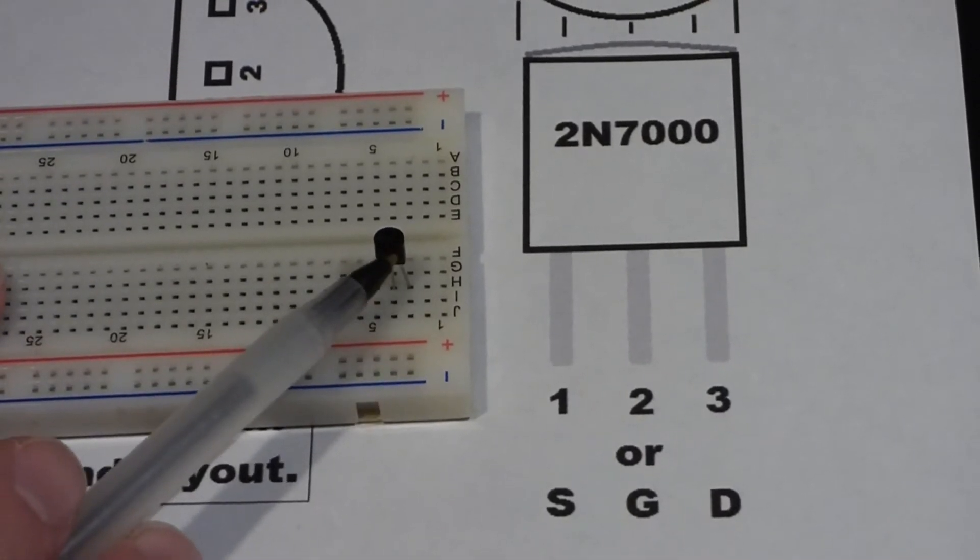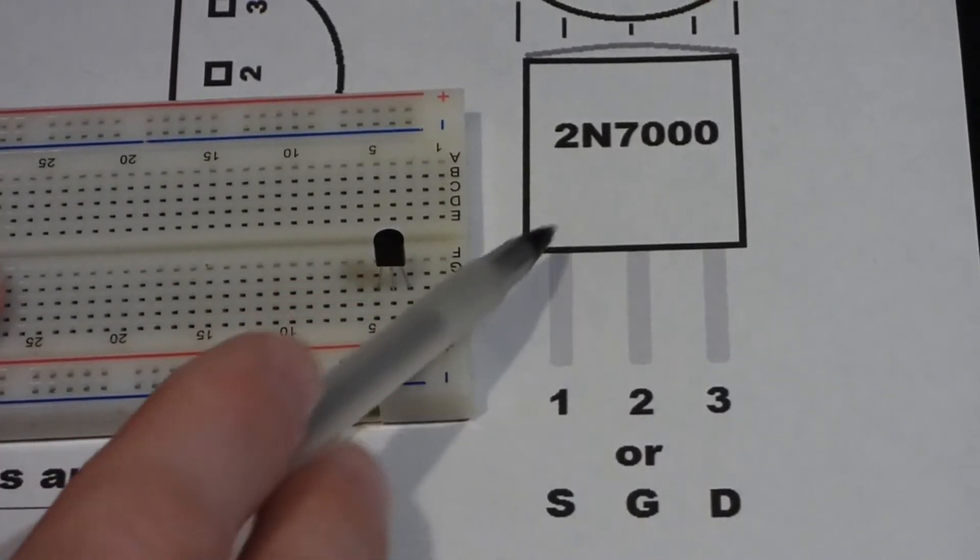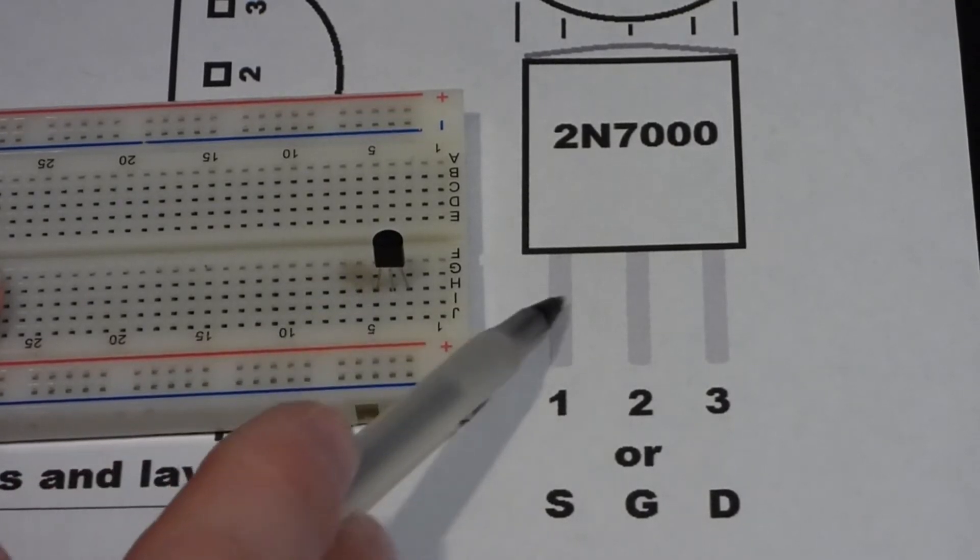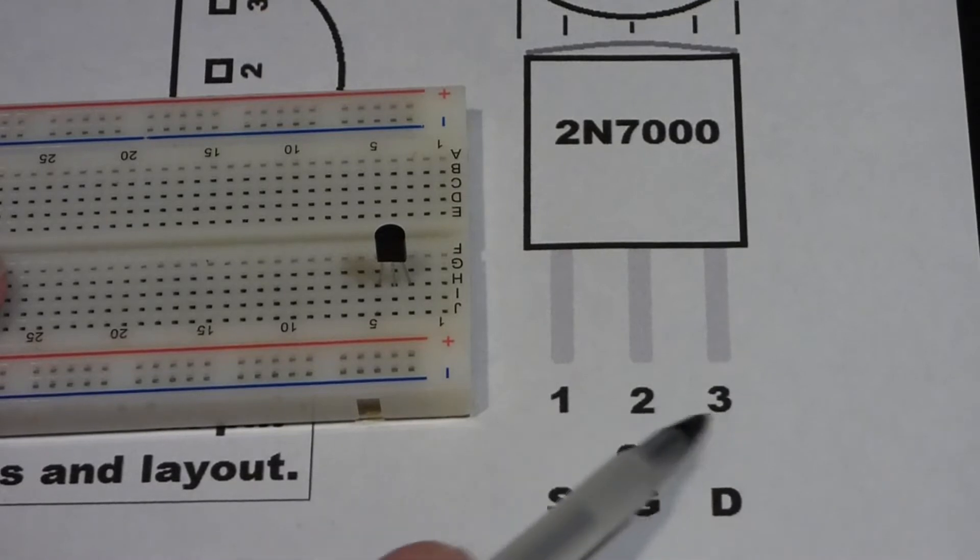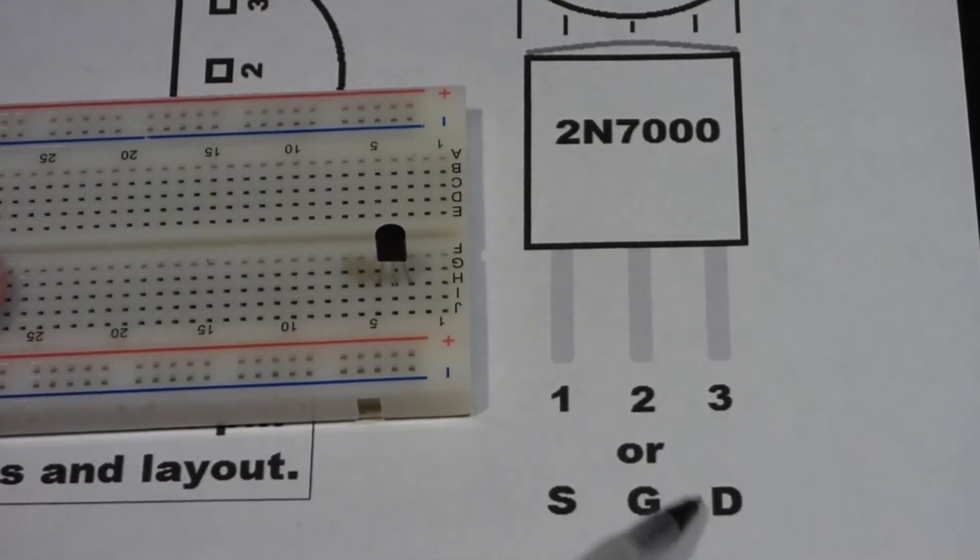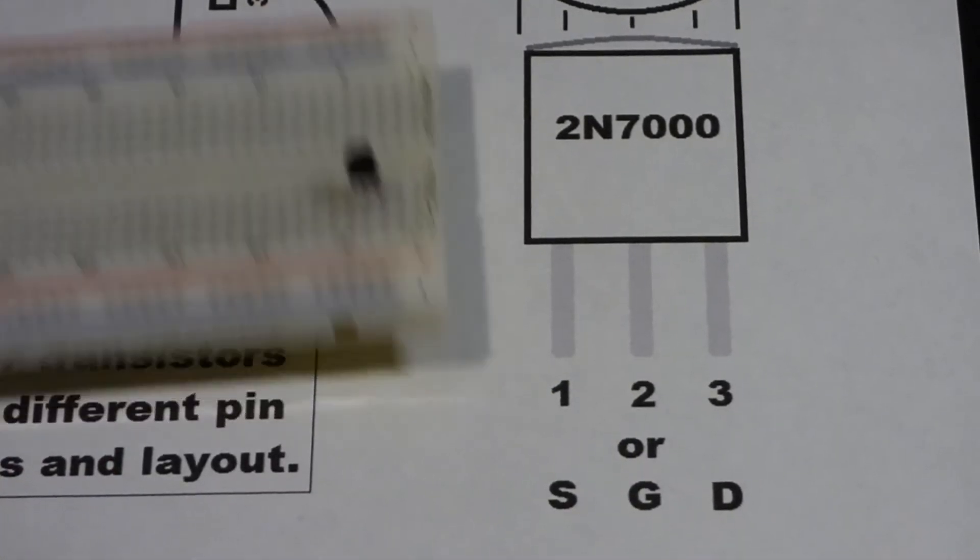So in any case, pretty straightforward. Just looking at this, you can see on the left, you can either think of this as pin one or the source. The datasheet may say 1-2-3 or it may say S-G-D for this particular transistor.